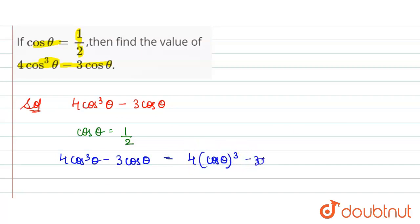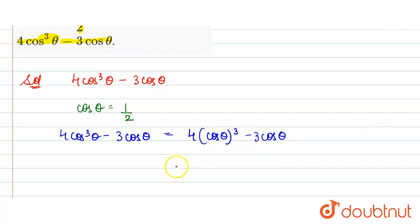So put the value of cos θ here. That is 4 × (1/2)³ - 3 × (1/2). So 4 into (1/2)³ - the cube of 2 is 8, so this becomes 4/8 - 3/2.